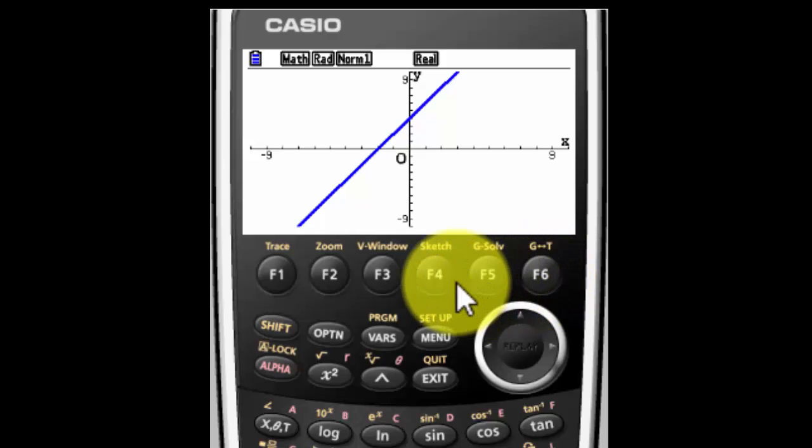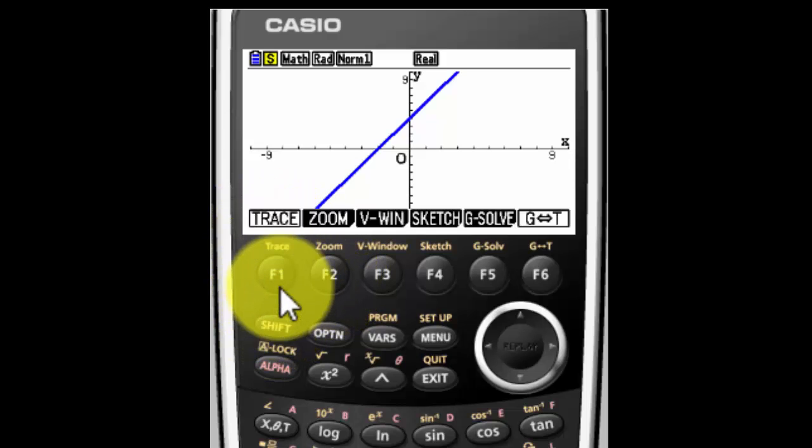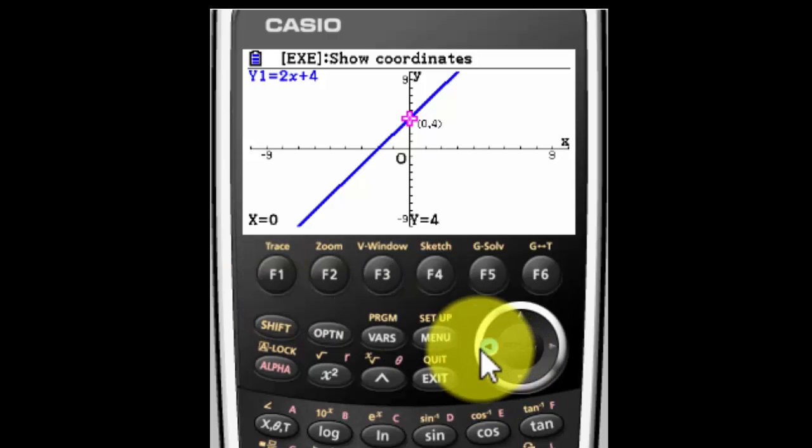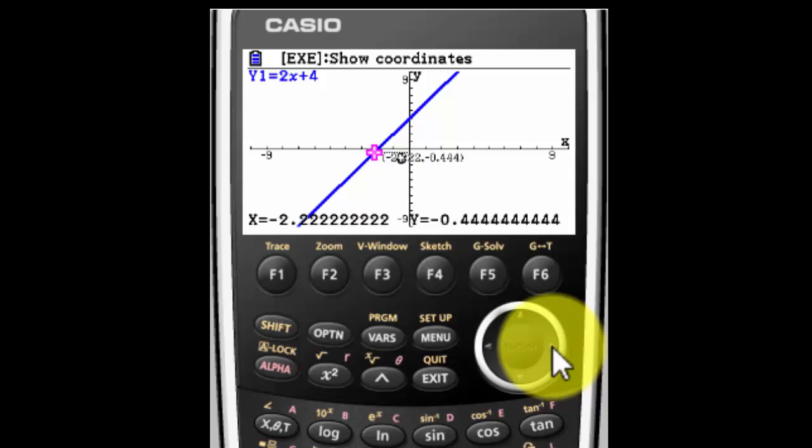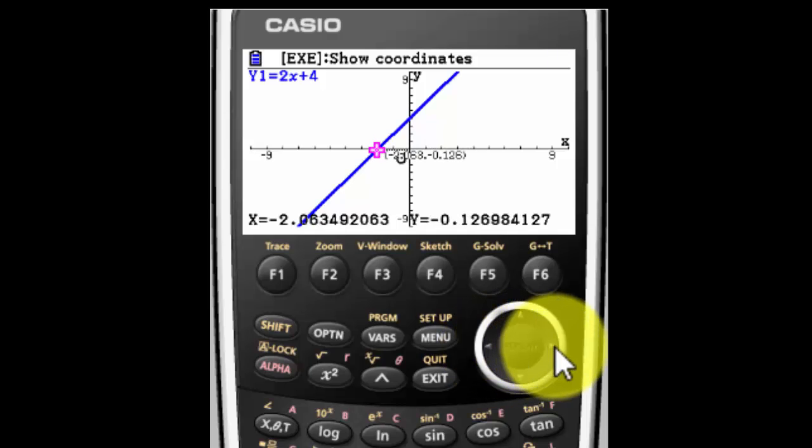Now let's say I want to see exactly what the x-intercept is. I want to trace it. So I'm going to hit Shift F1 and I can trace it. And it will tell me at every point exactly what my values are. And I can't quite get it exactly on x-intercept but pretty darn close. I'm guessing it's probably about negative 2.